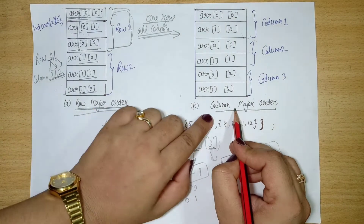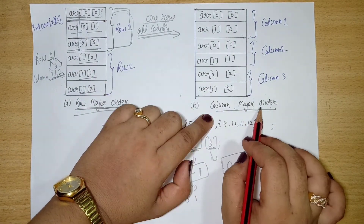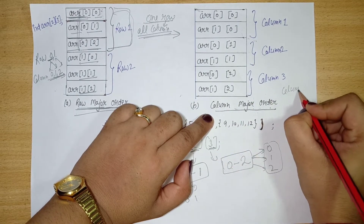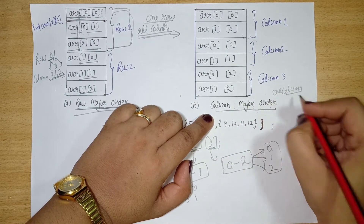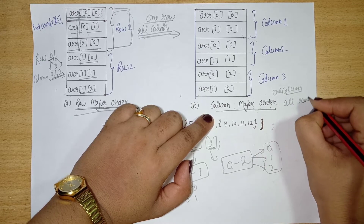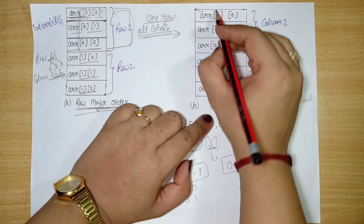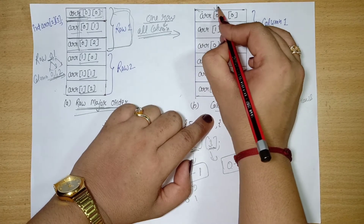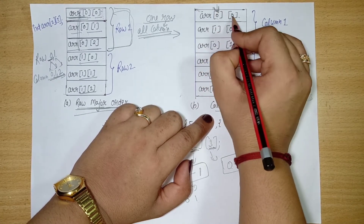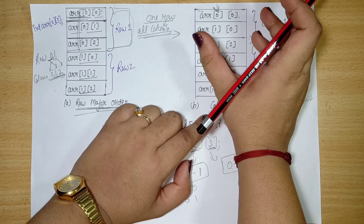Now let's talk about column major order — it is just the opposite. In column major order, we take one column first and write all rows within that column. We need to take care of the sequence and not change it.